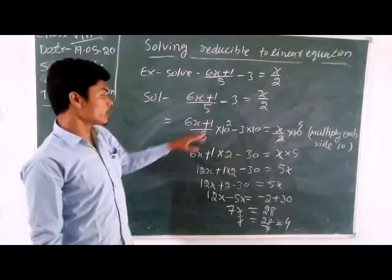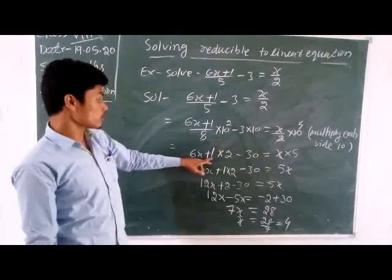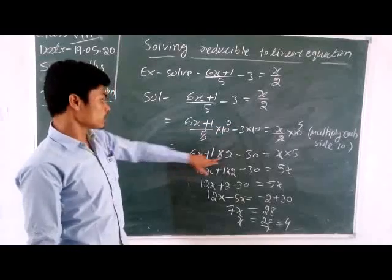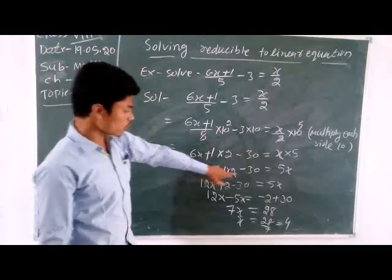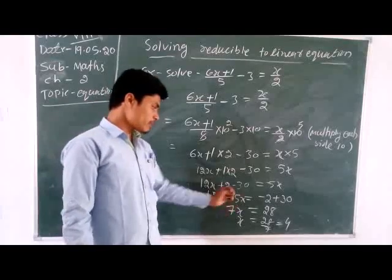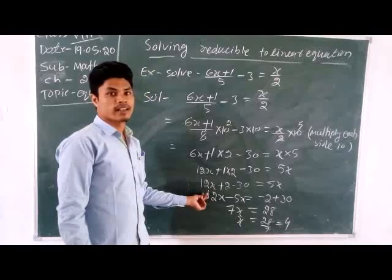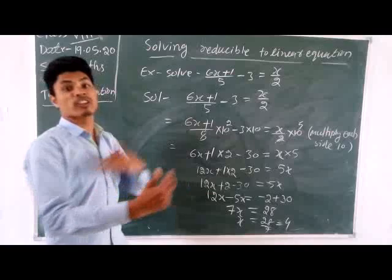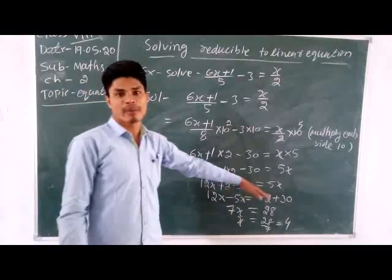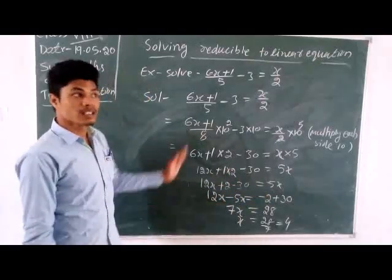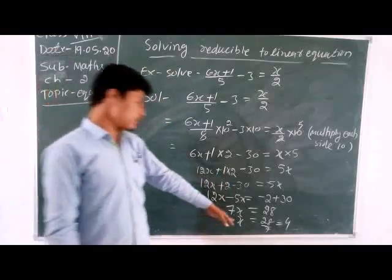So 6x into 2 equals 12x, plus 1 into 2 equals 2, minus 30 equals 5x. Then 12x minus 5x equals minus 2 plus 13. We use the transpose method — transpose method means moving from one side to the other side, left to right or right to left, and their sign also changes: plus becomes minus, minus becomes plus. When division is there it changes to multiplication, and multiplication changes to division. Now 7x equals 28, x equals 4.